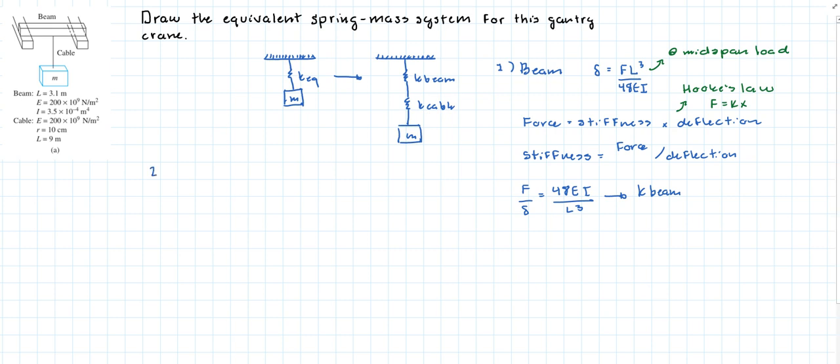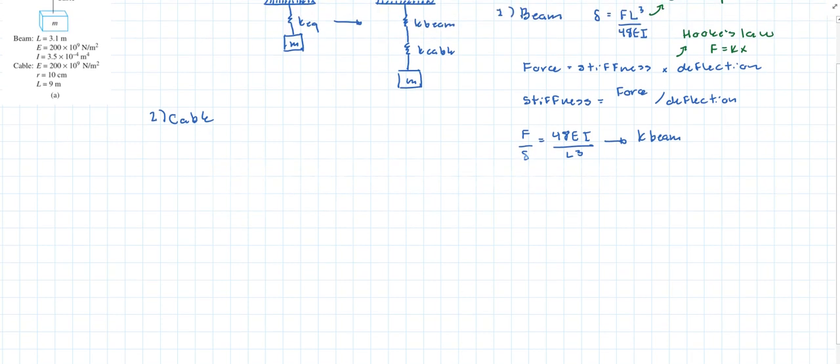Now what about the stiffness of the cable? Well this is pretty simple, you've probably seen this formula before. We will say that the stress is equal to the force divided by the area, but that's also equal to Young's modulus times the non-dimensional deformation. So you see here we have the same pattern. We have a force and then we have some deformation. This is non-dimensional deformation. So what we're going to do is we're just going to isolate the force. And that should be equal to AE times the non-dimensional deformation.